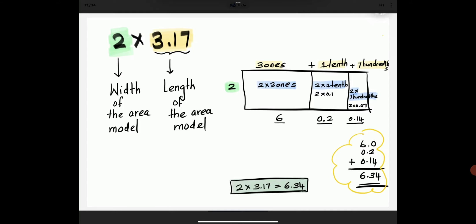2 is the width of the rectangle and 3.17 is the length of the rectangle.